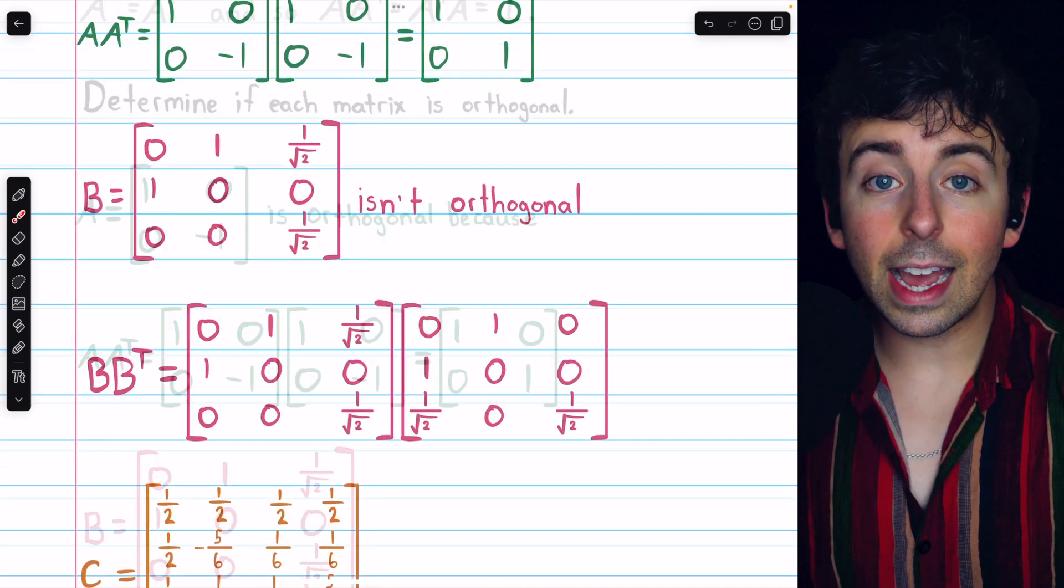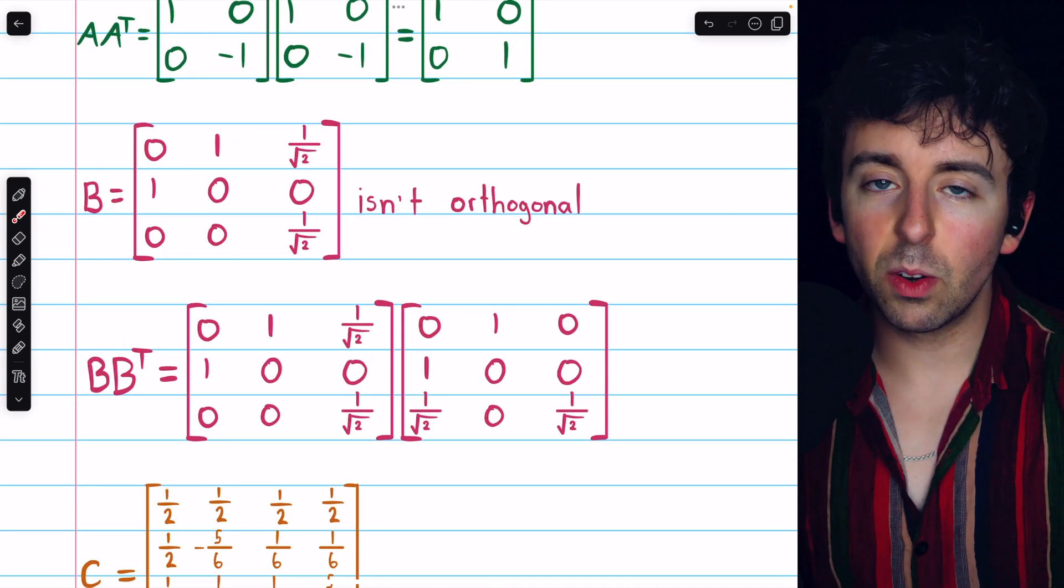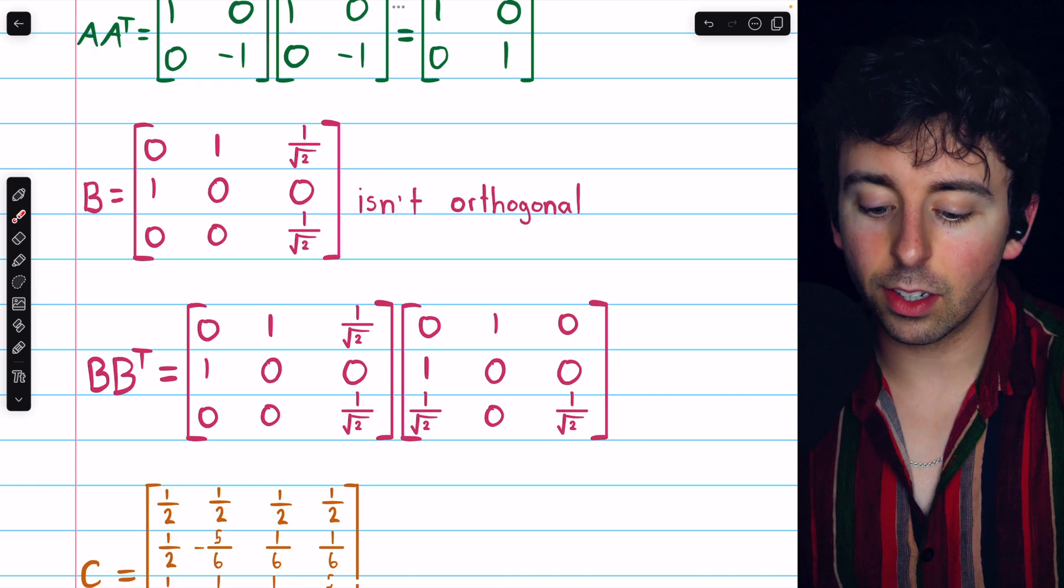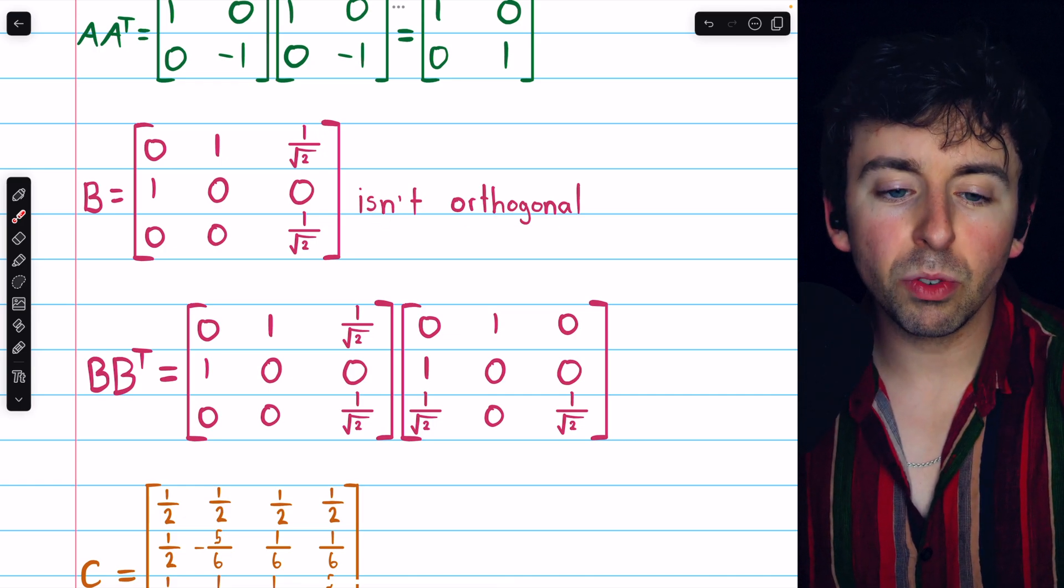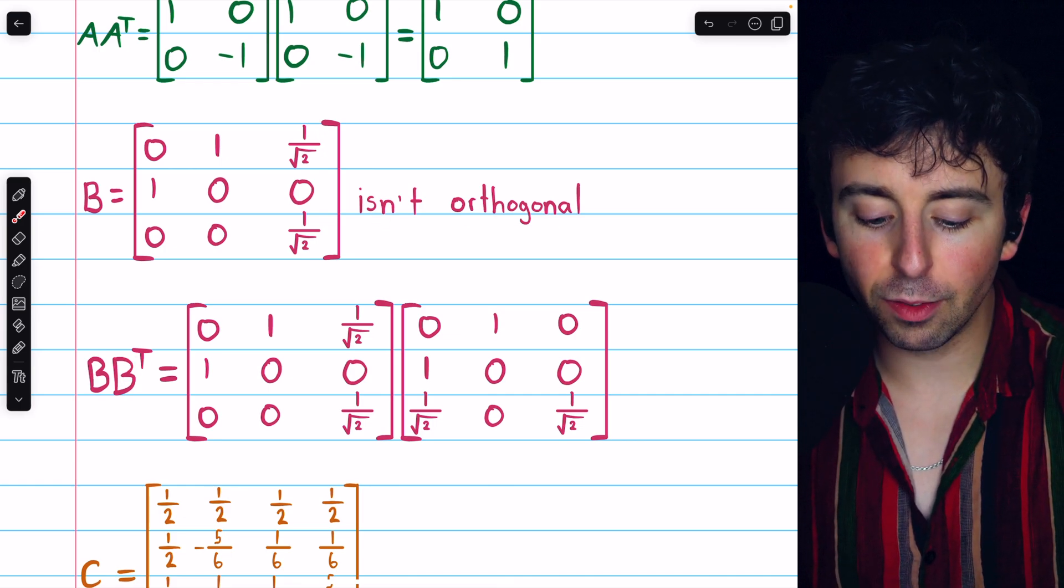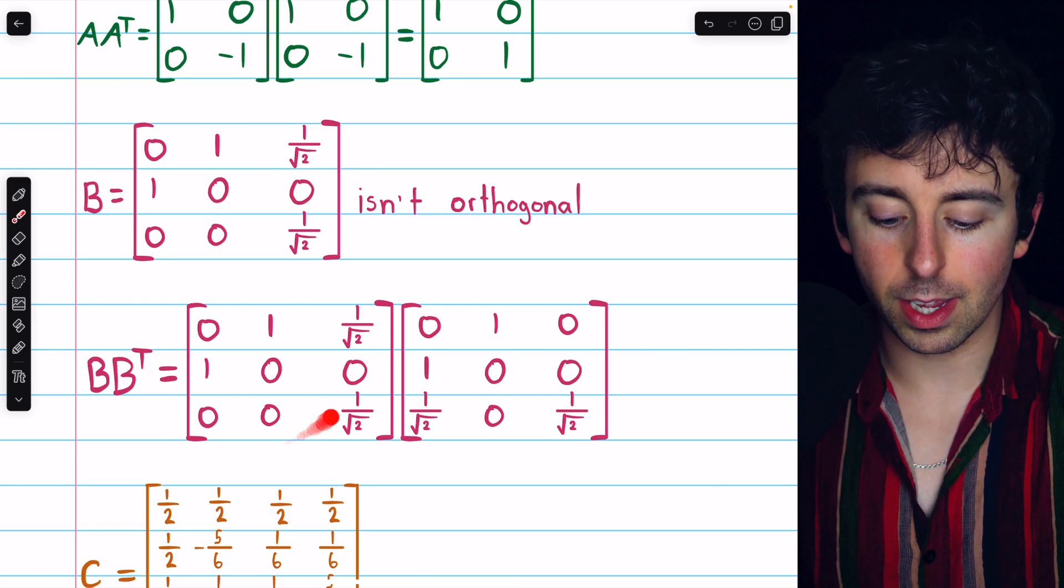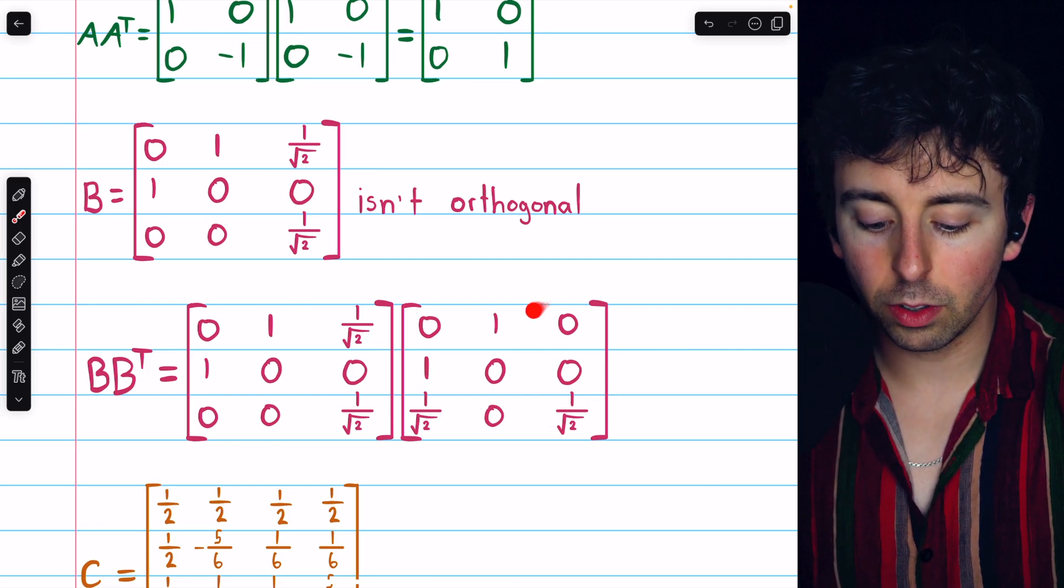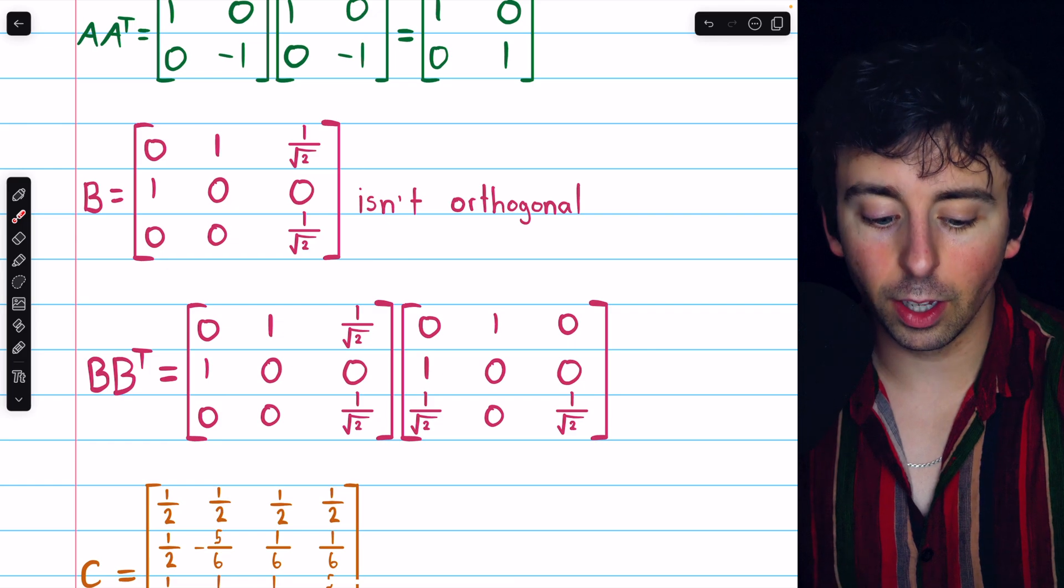Next is this matrix B, and we're going to find that it isn't orthogonal. Once we look at B times B transpose, here's B, here's B transpose, which is found by swapping the rows and columns.